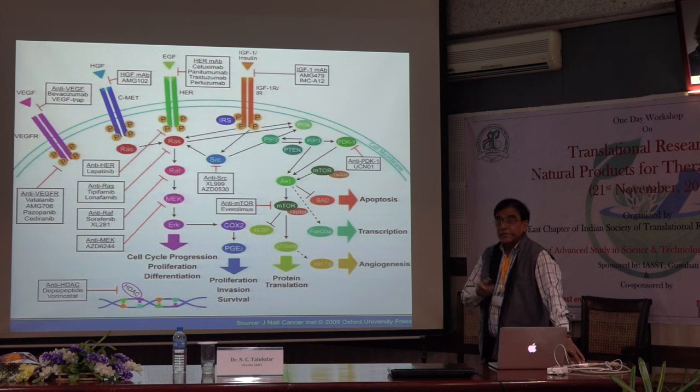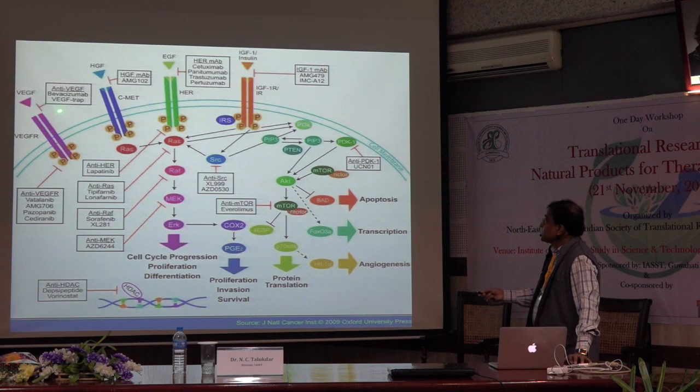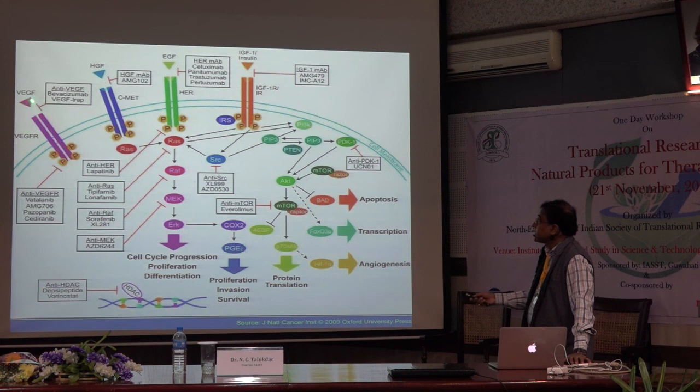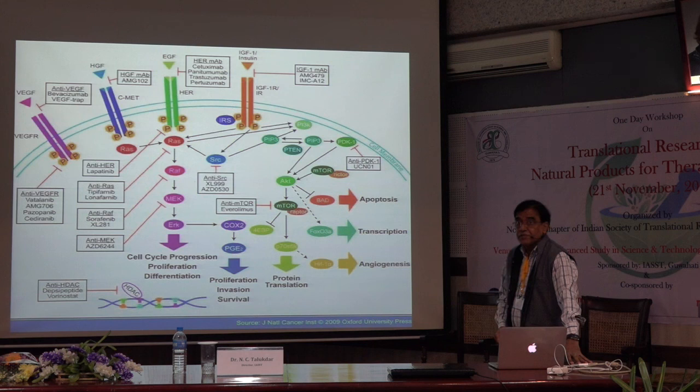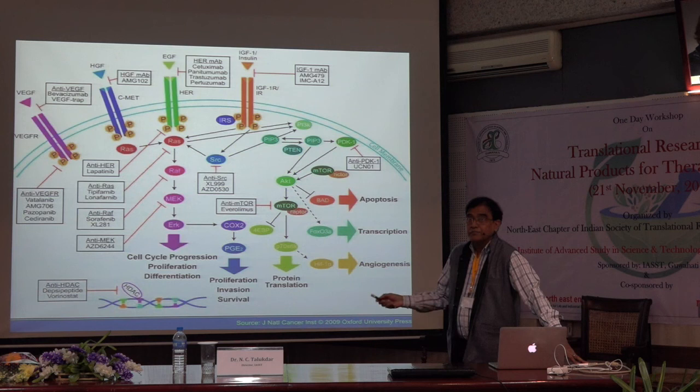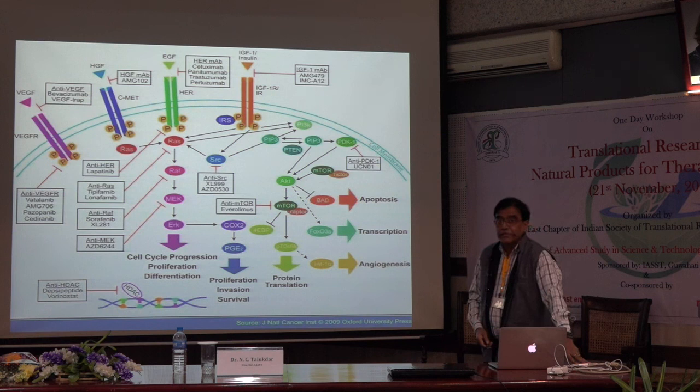For example, Bevacizumab, also called Avastin — this is a monoclonal anti-VEGF antibody, which is a billion-dollar business first discovered by Genentech. Now many generic forms of this drug are available from many companies including Biocon and others in India.